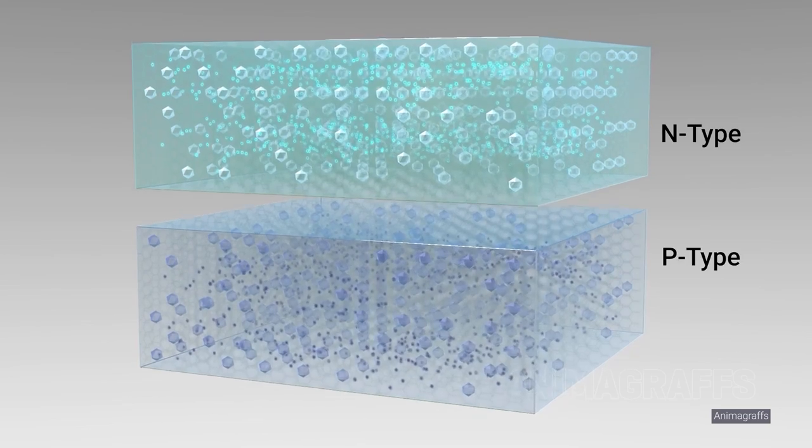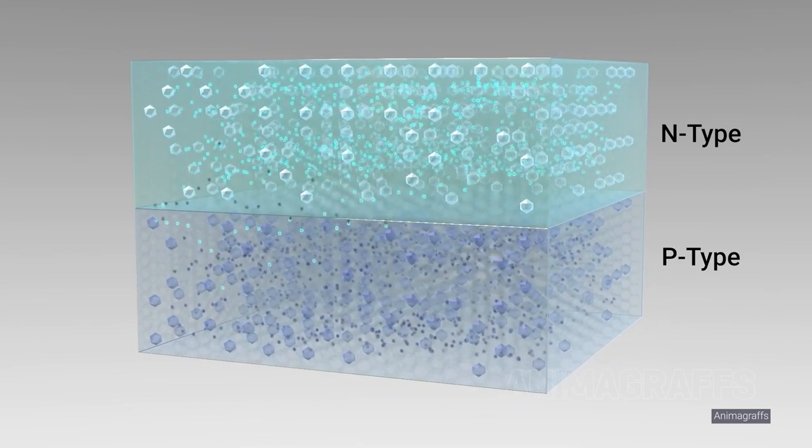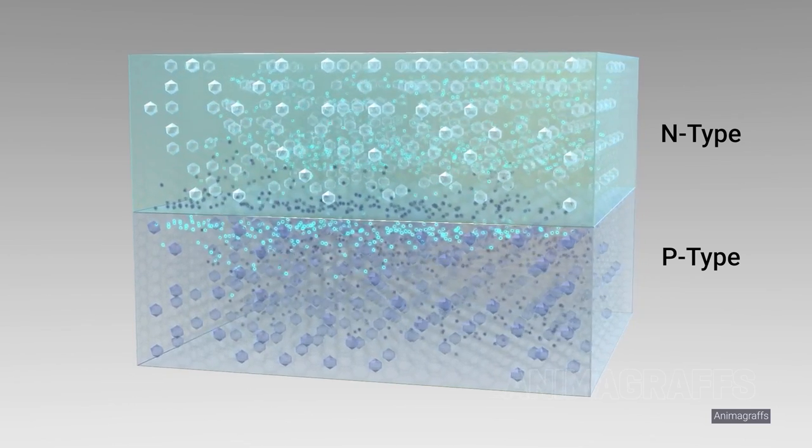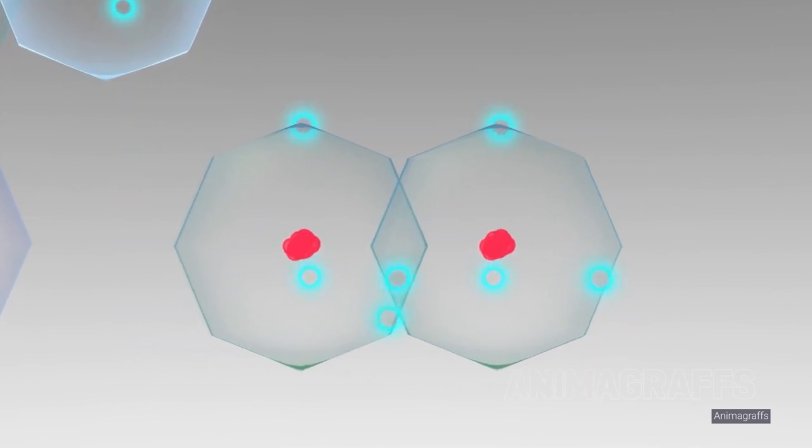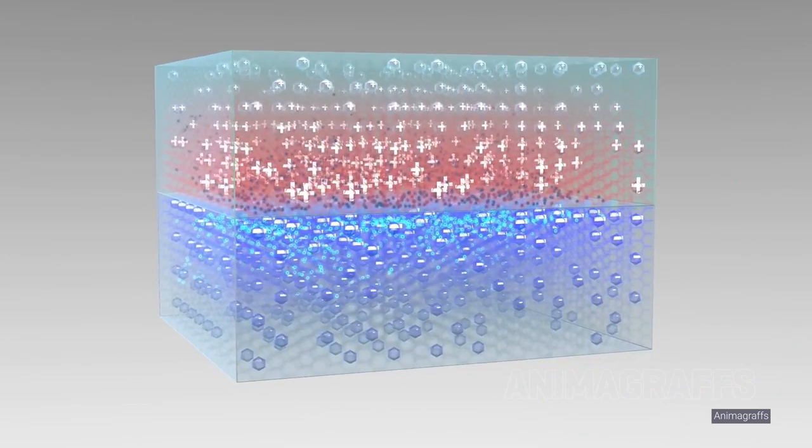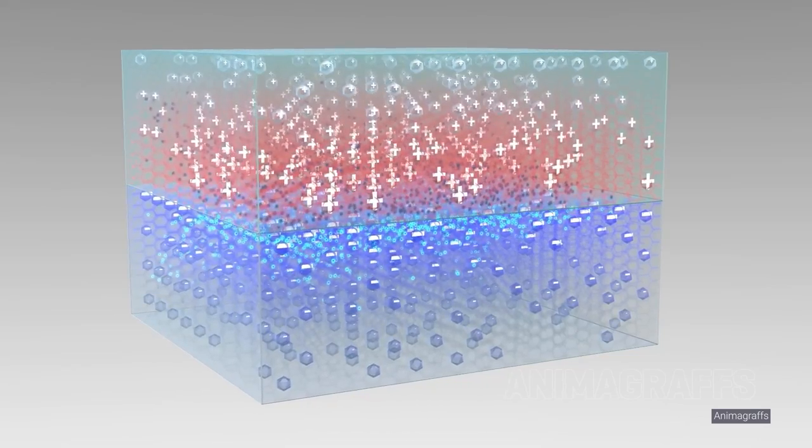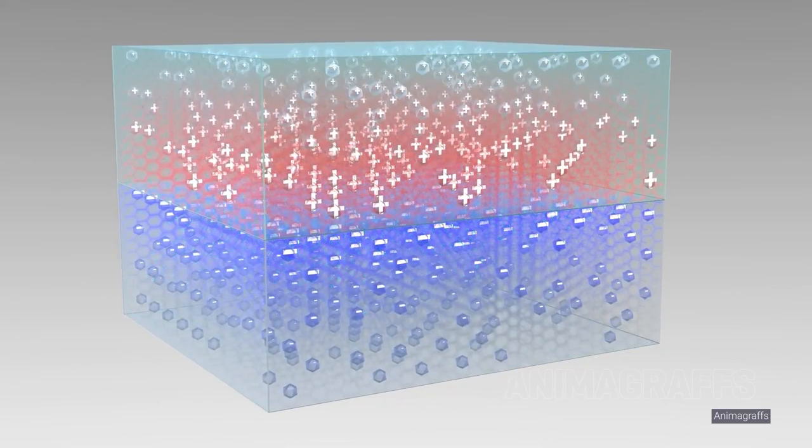When an N-type and P-type material are put in contact, free electrons from the N-type material and free holes from the P-type material move across the boundary and cancel each other out. The electrons fill in the holes. This uncovers the fixed positive and negative charges of the dopant ions, which creates a built-in electric field that stops more electrons and holes from moving across the boundary. This electric field corresponds to a built-in voltage and acts like a one-way valve for charge carriers.